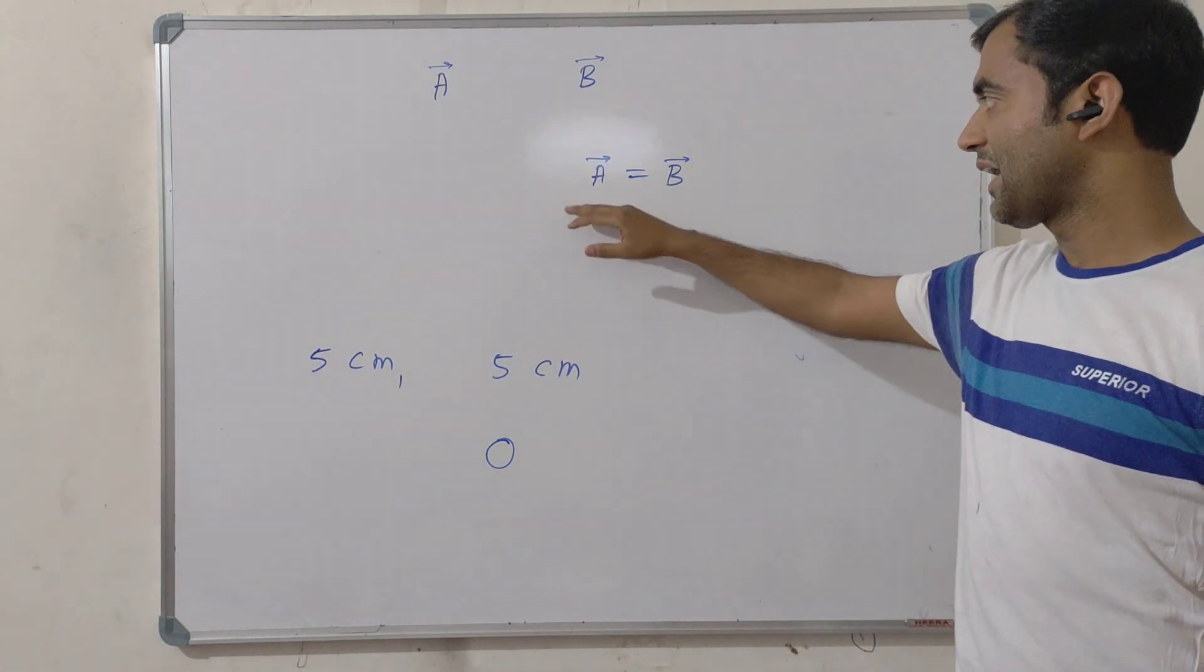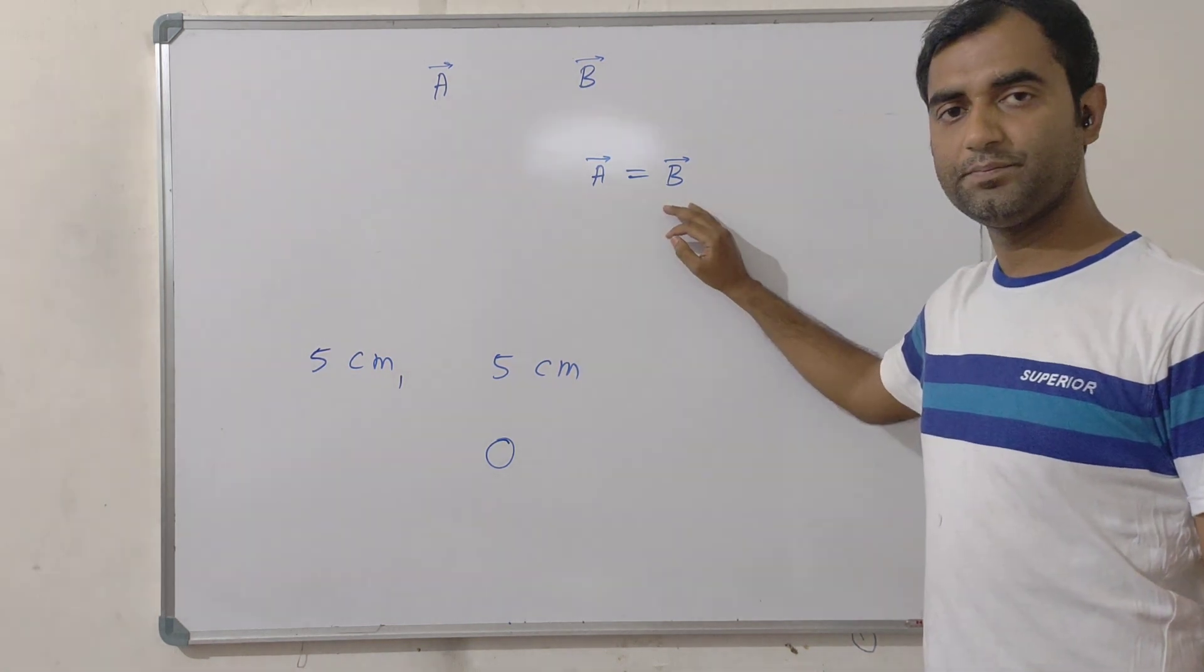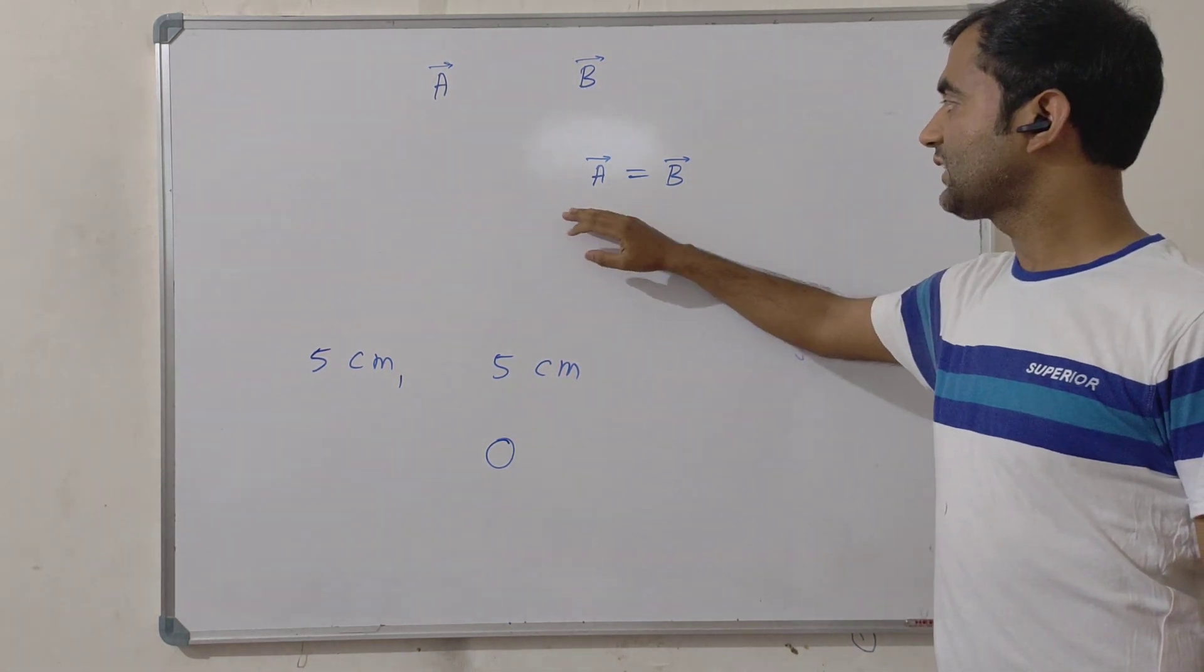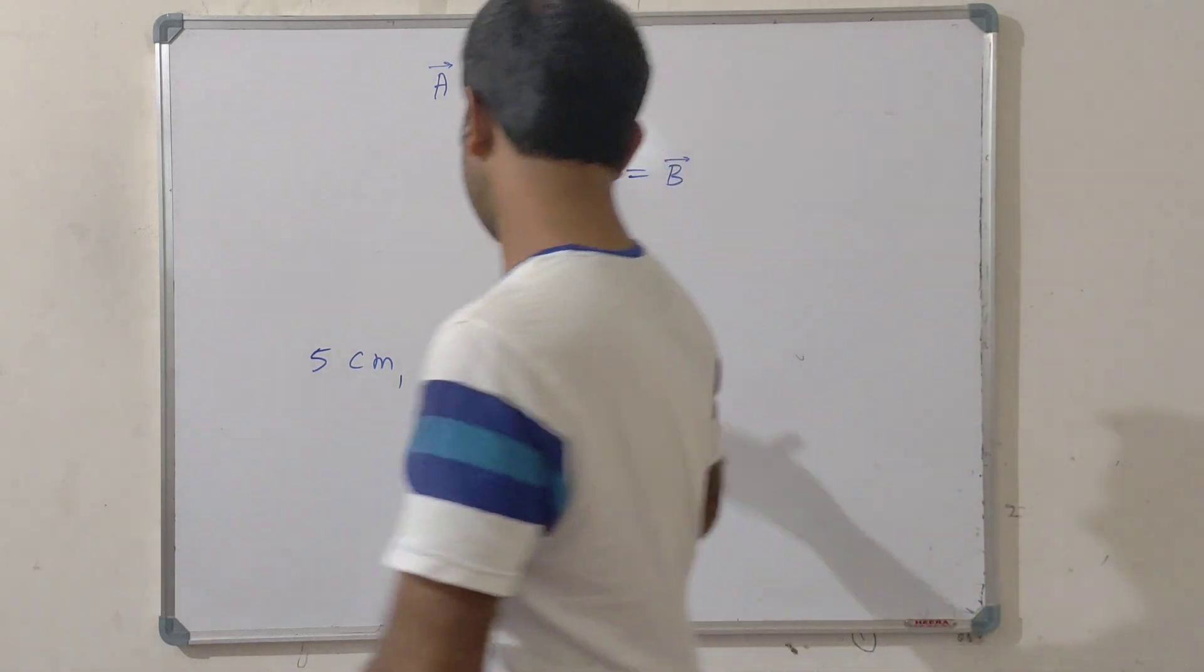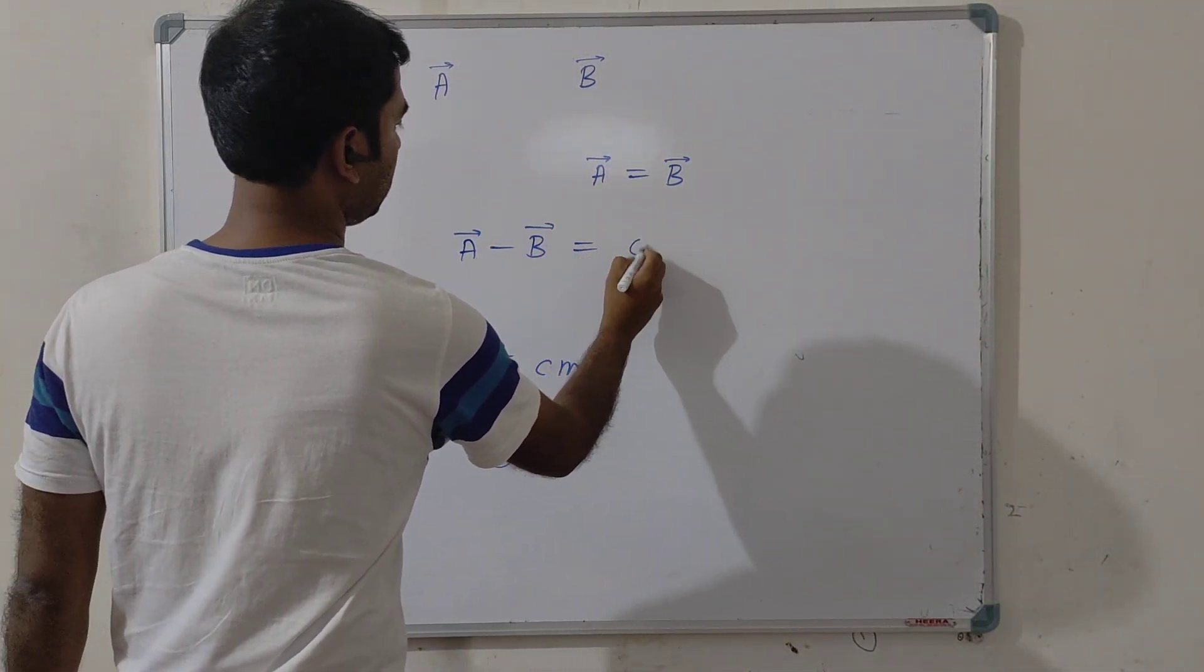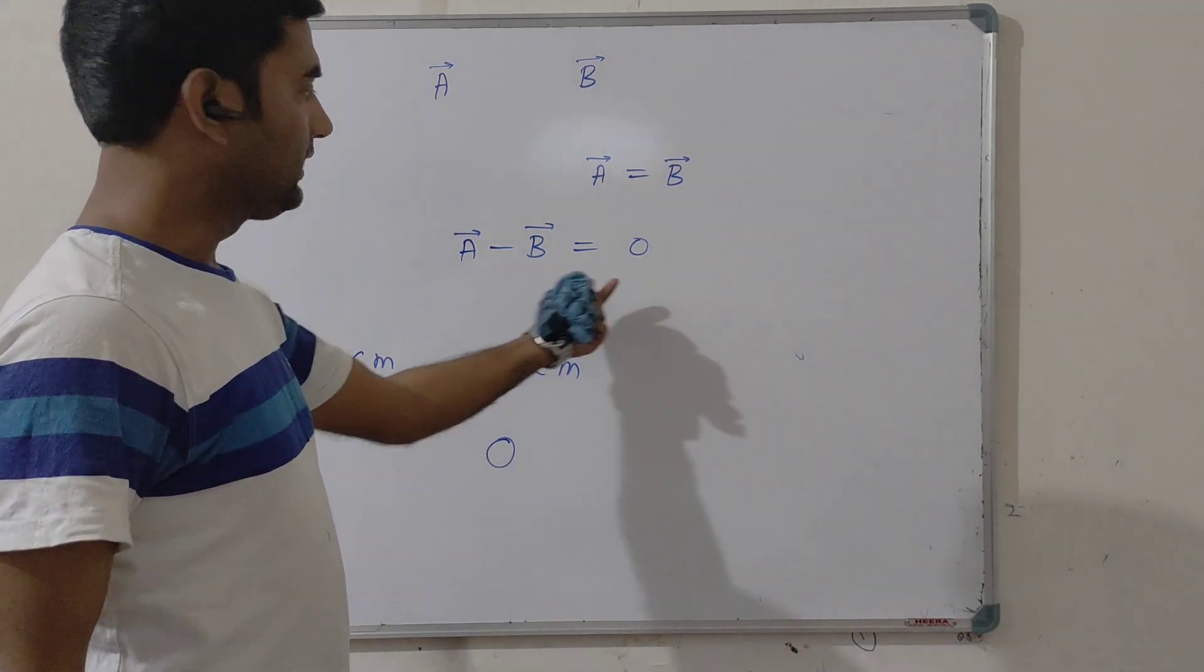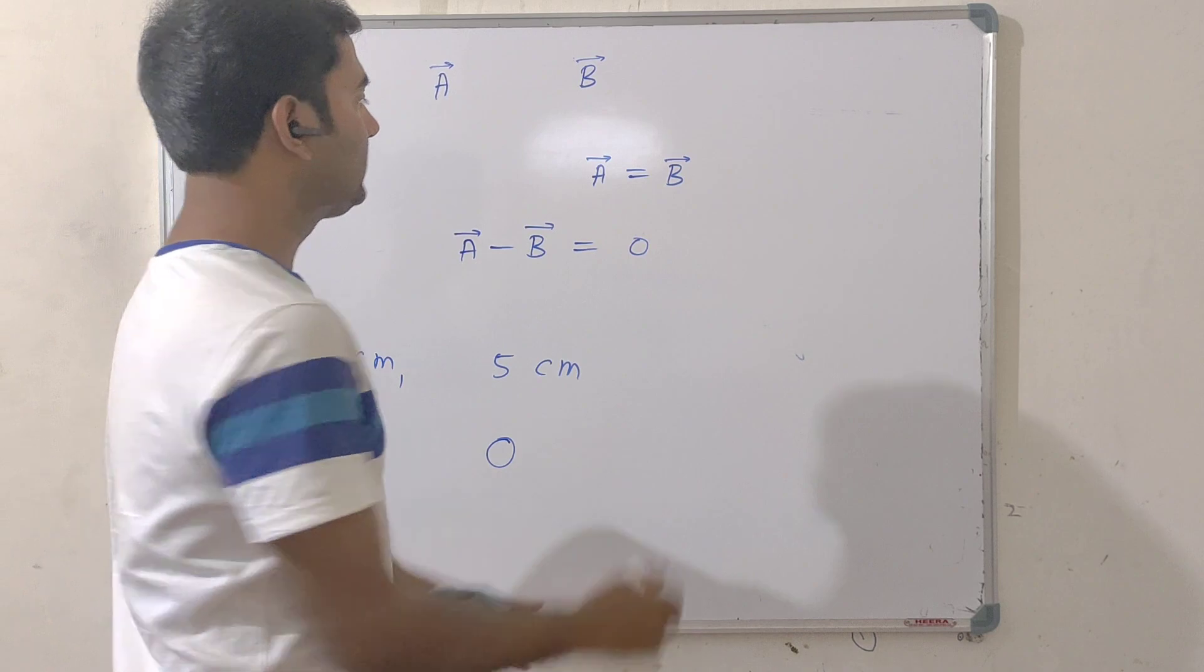What does it signify? Their magnitudes are same. Their directions are also same. So if we subtract them, that is A vector minus B vector, then the result will become a 0. Being the subtraction of two vector quantities, this 0 will be a 0 vector.